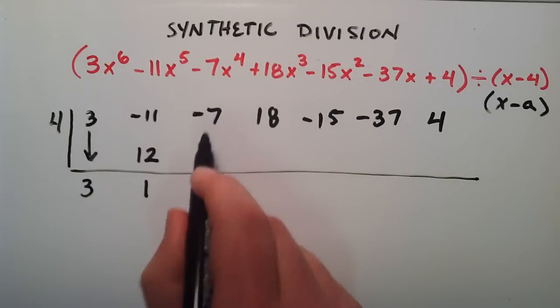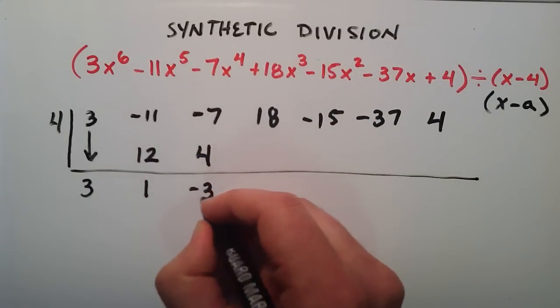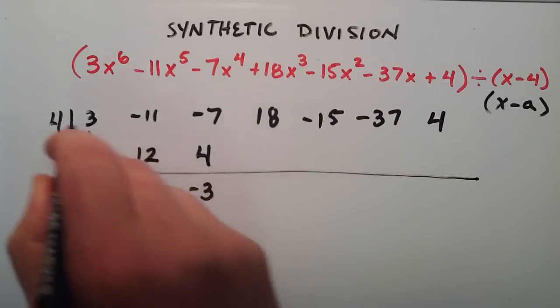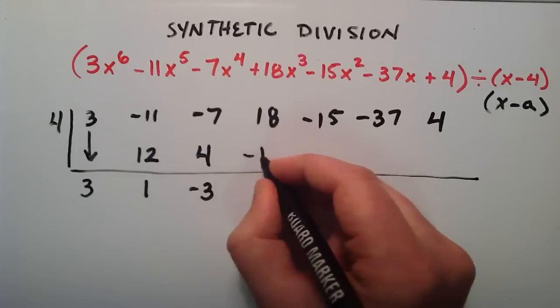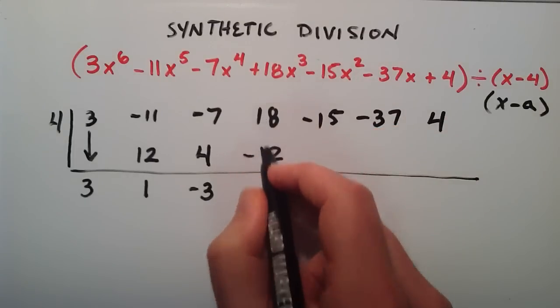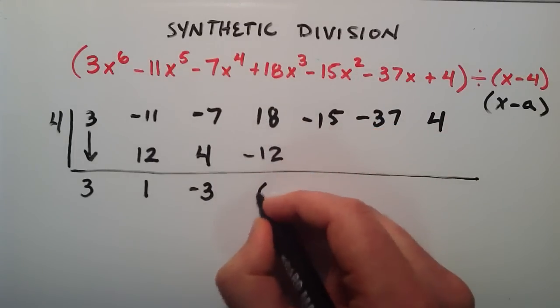Negative 7, we add to 4 now. So negative 7 plus 4 is a negative 3. And then this number gets multiplied by 4. Negative 3 times 4 is a negative 12. 18 plus negative 12 is a positive 6.